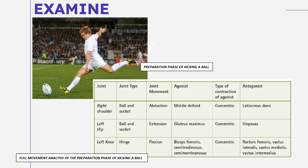The joint types are as follows: for the right shoulder, we have the ball and socket joint. For the left hip, we also have the ball and socket joint, since the arms and the hip cannot connect without a ball and socket joint. For the left knee, the joint type is hinge.